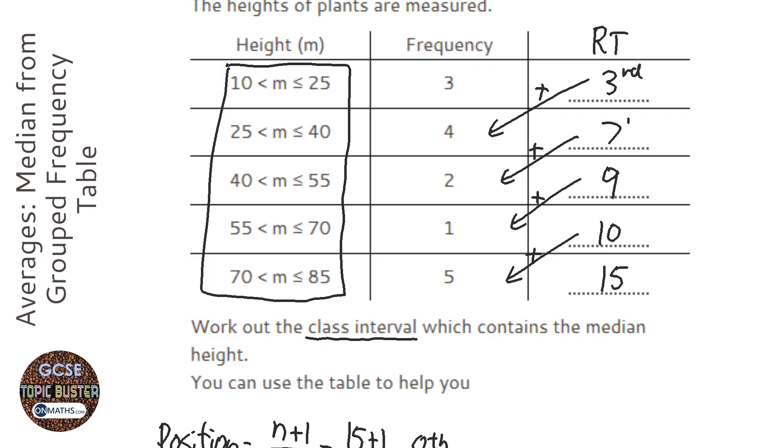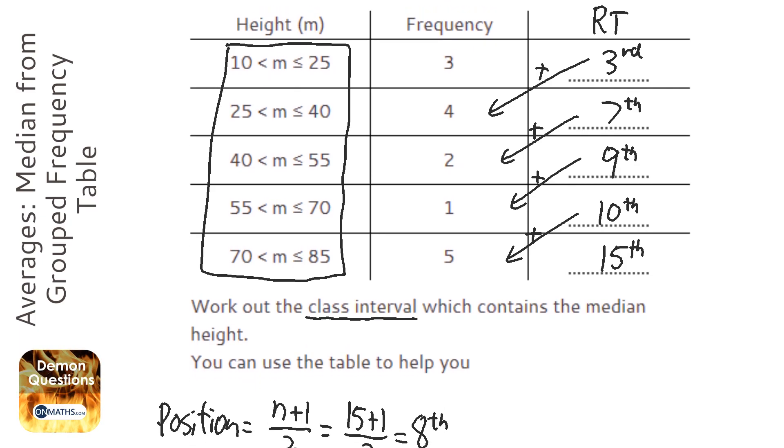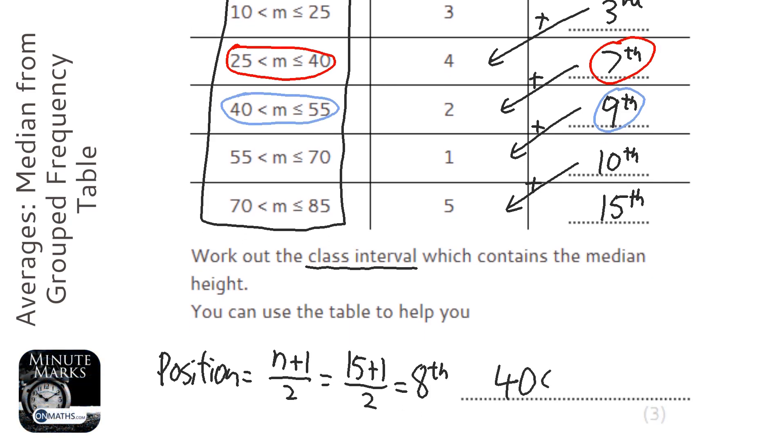Now each of these values shows us the position of the last one in each group. So the third one is the last one in the first group. The seventh is the last one in the second group. So we're looking for the eighth. Now if the seventh is the last one in this group, that means the eighth is going to be in this group. So the eighth and the ninth are in this group. So our answer will be 40 and 55.